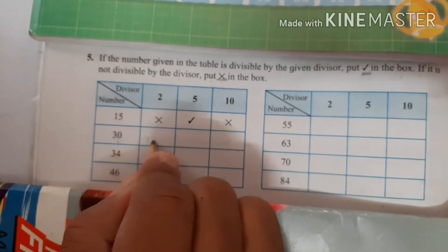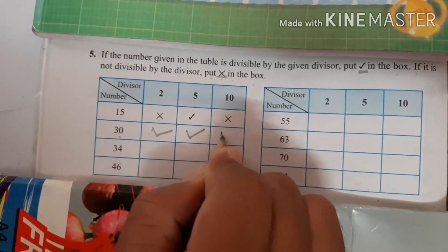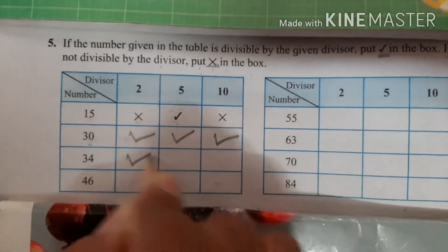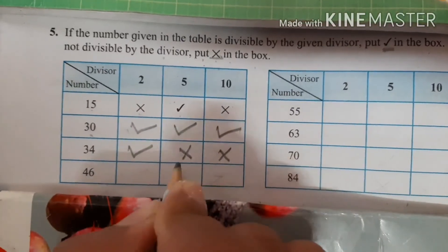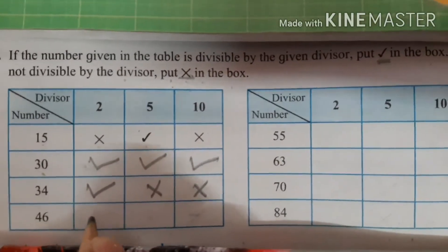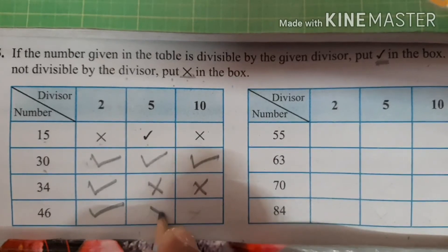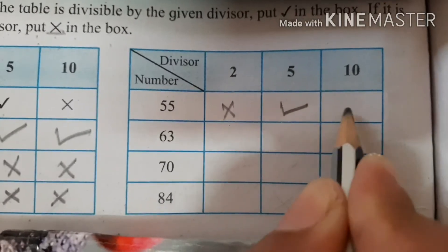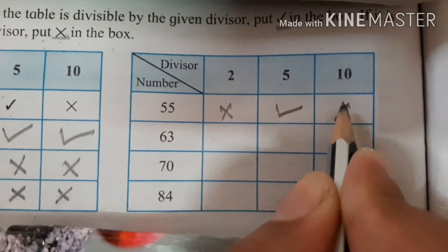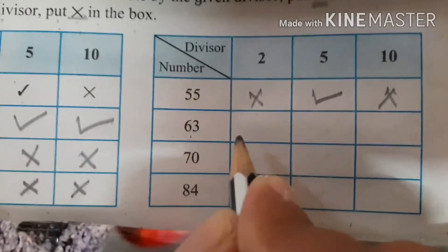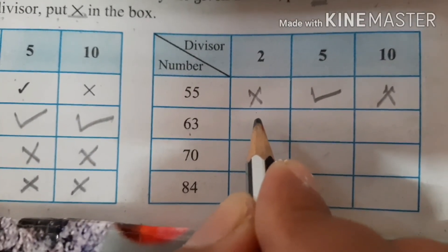Is the number 30 divisible by 2? Yes. By 5? Yes. By 10? Yes. Next number: 34 — divisible by 2? Yes. By 5? No. By 10? No — unit place has neither 5 nor 0. Next: 46 — divisible by 2? Yes. By 5? No. By 10? No. Next: 55 — divisible by 5? Yes.